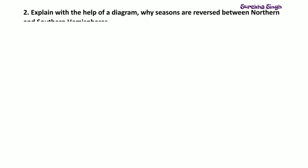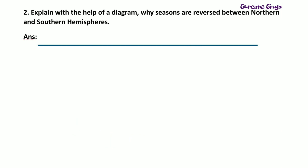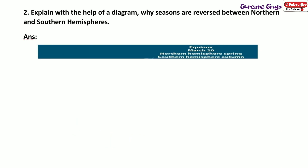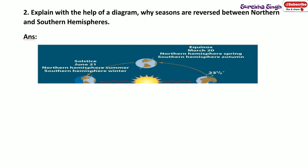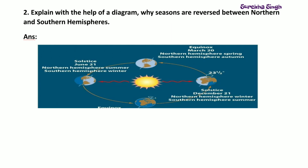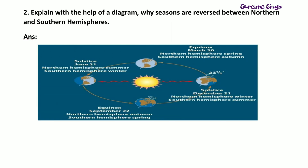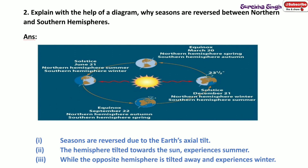Question 2: Explain with the help of a diagram why seasons are reversed between northern and southern hemispheres. Seasons are reversed due to earth's axial tilt. The hemisphere tilted towards the sun experiences summer, while the opposite hemisphere is tilted away and it experiences winter.